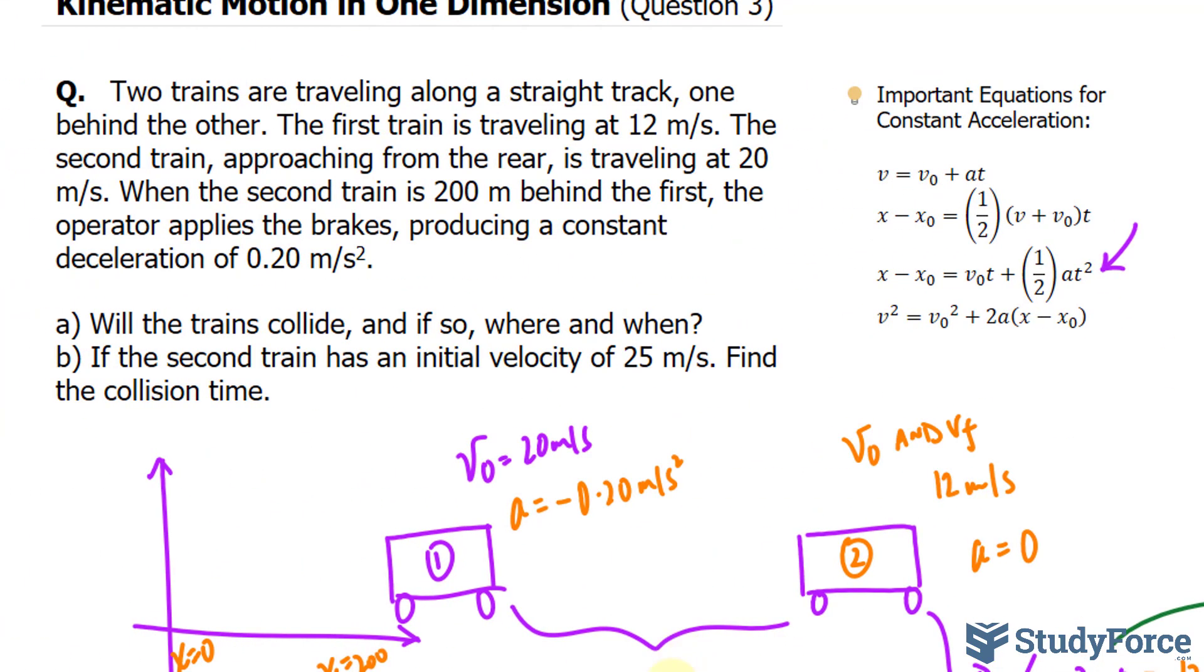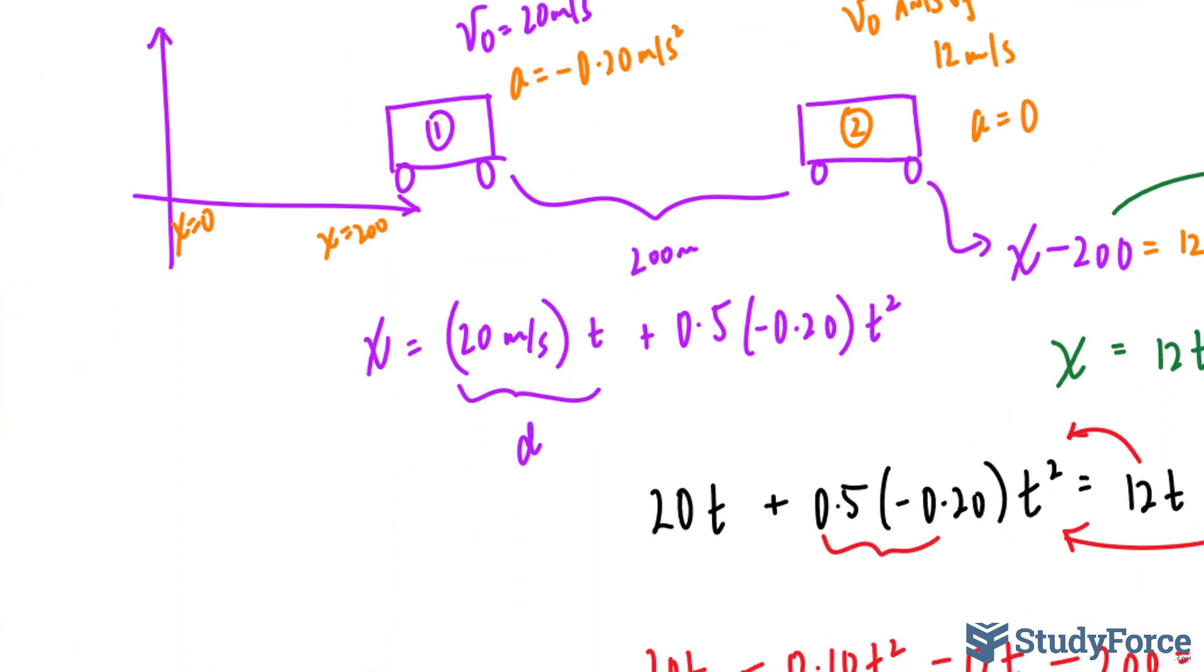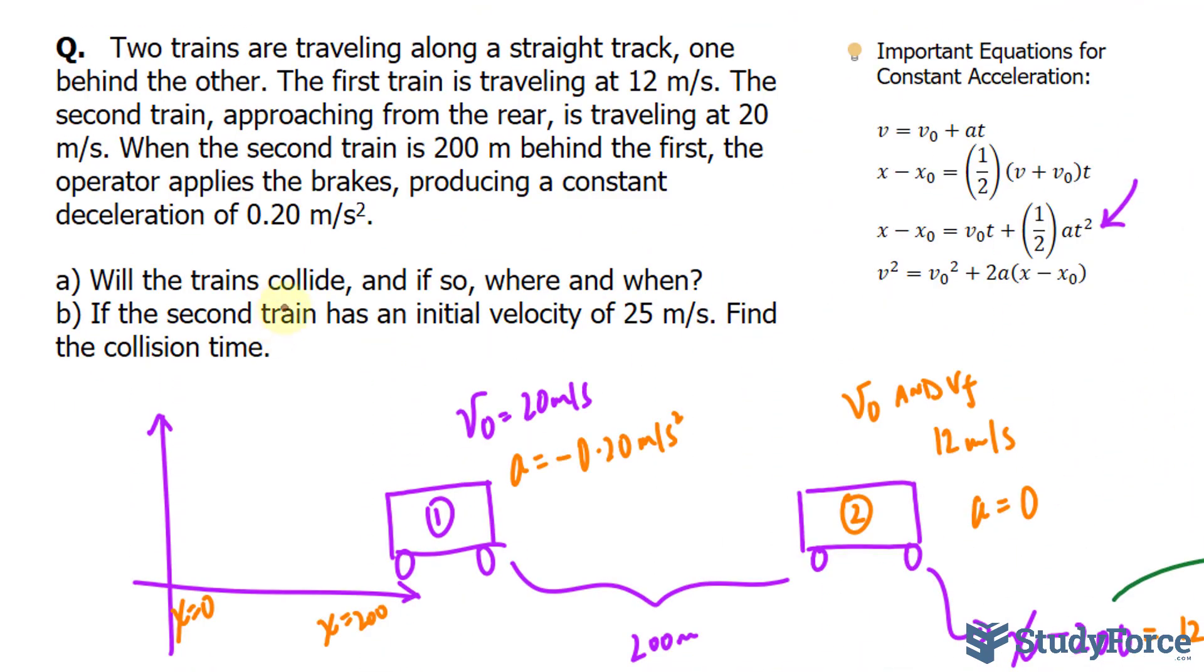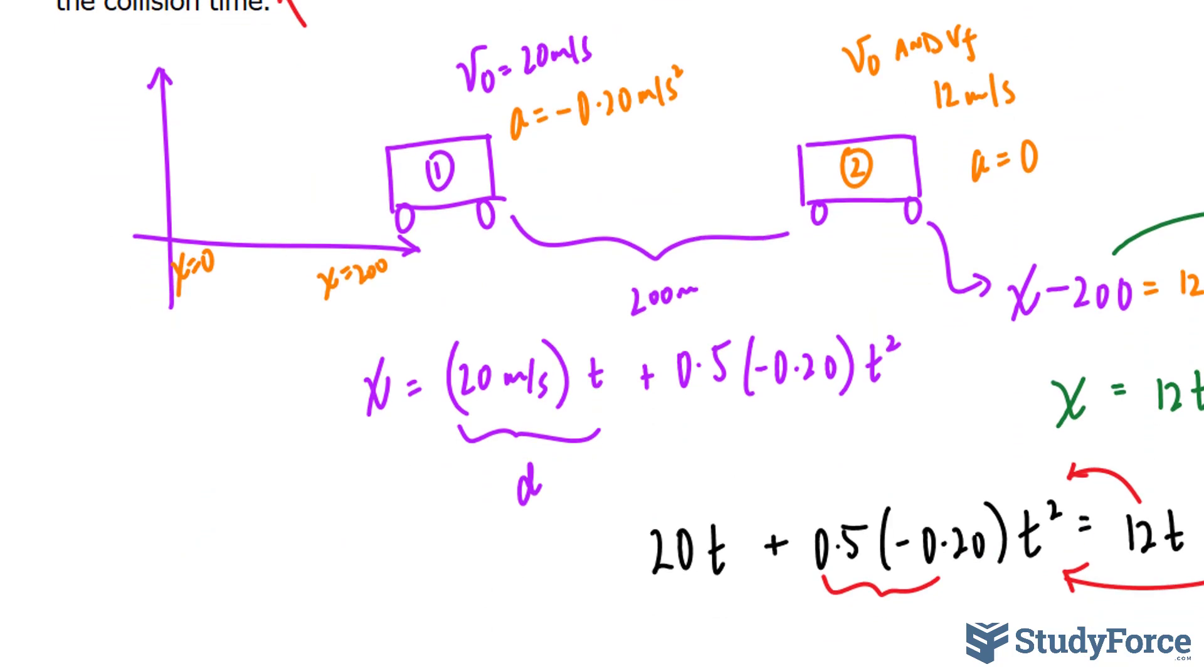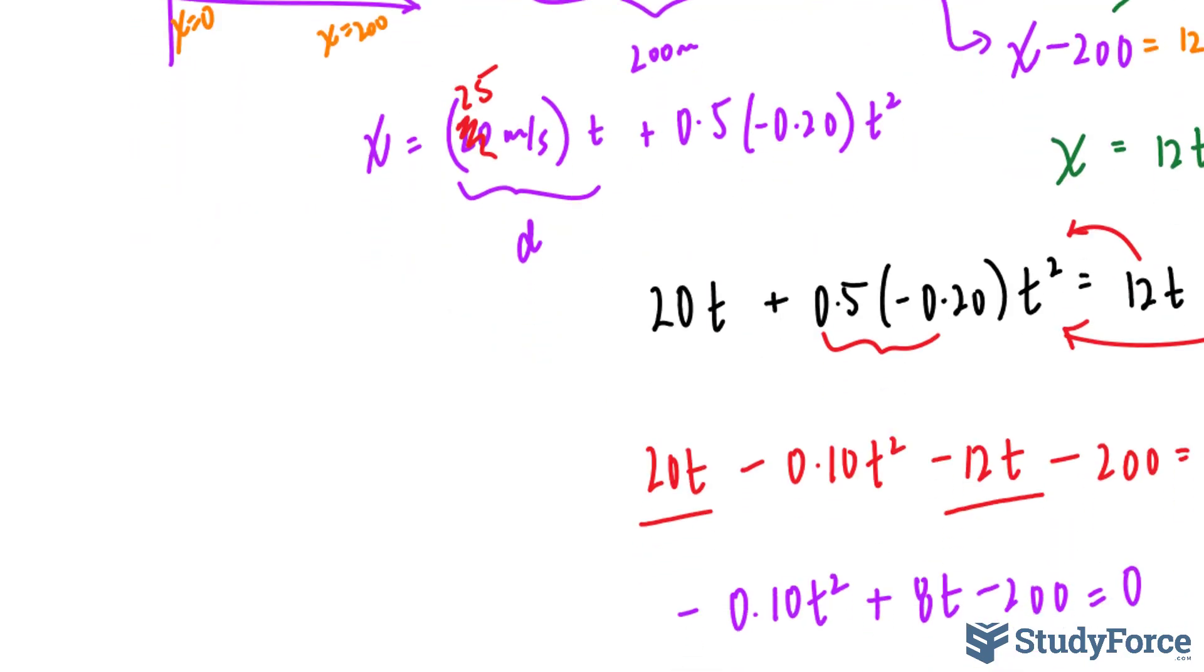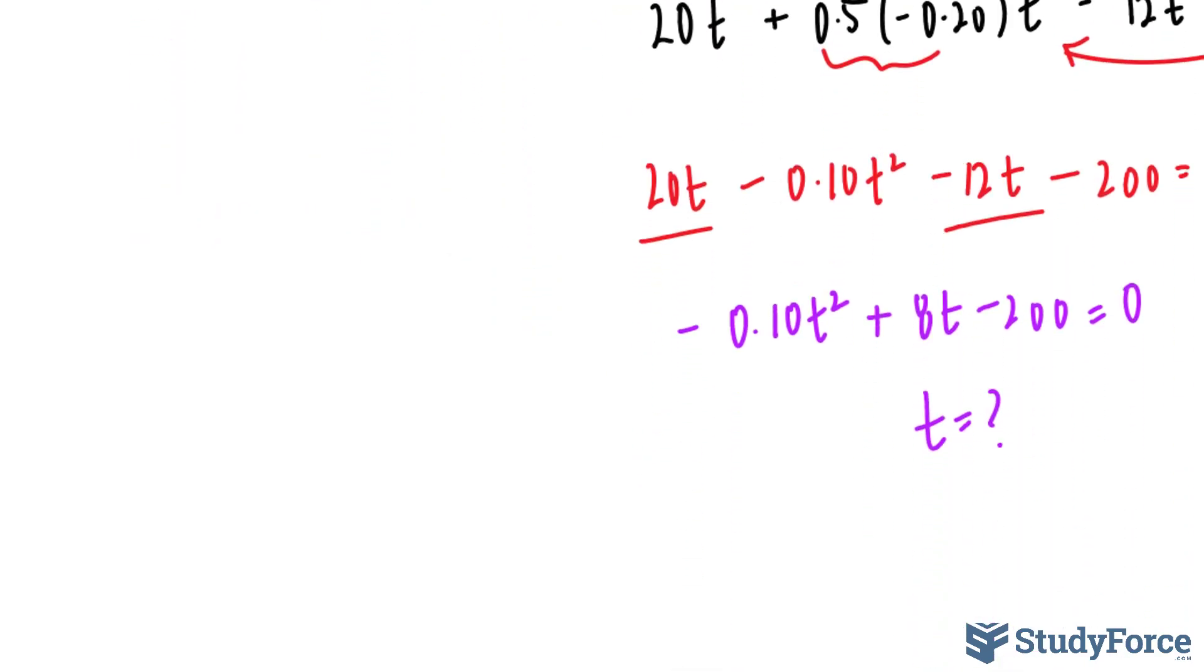To answer part B, if the second train has an initial velocity of 25 meters per second. So in this case, they are saying the second train for us, I set the second train as the one that was trailing. So let's not get confused here. This time, rather than 20, it's 25, even faster. Let's redo that calculation and see what the time is.